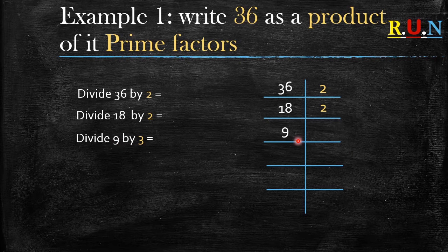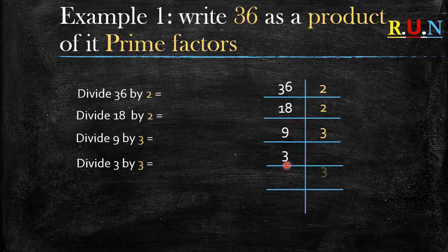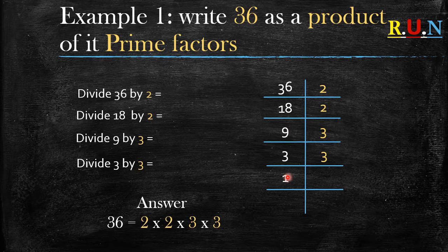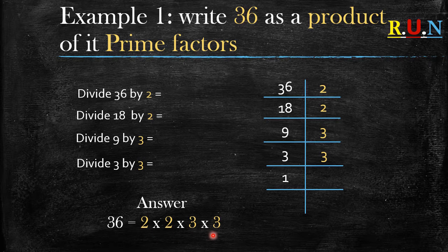9 divided by 3 gives us 3. Then we divide 3 by 3, which gives us 1. Each time you reach a 1, it means you have reached your answer. So the answer is: 36 = 2 × 2 × 3 × 3. This is the product of 36 as its prime factors. To test it, use your calculator — type in 2 × 2 × 3 × 3 and you should get 36.